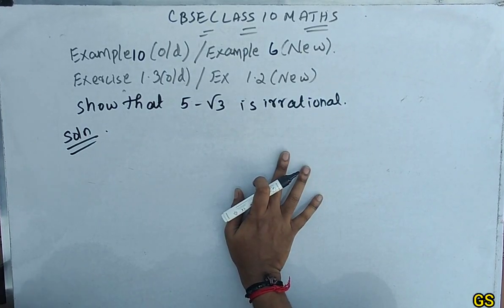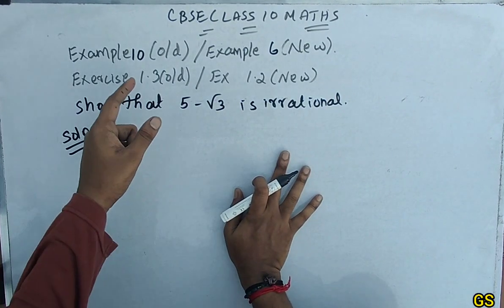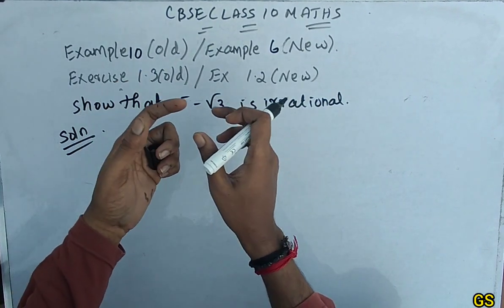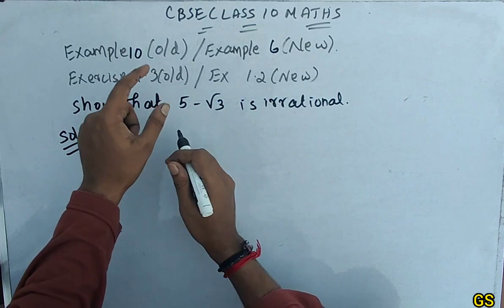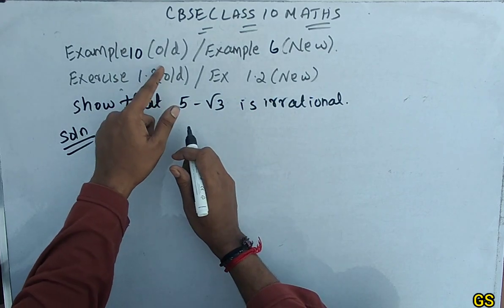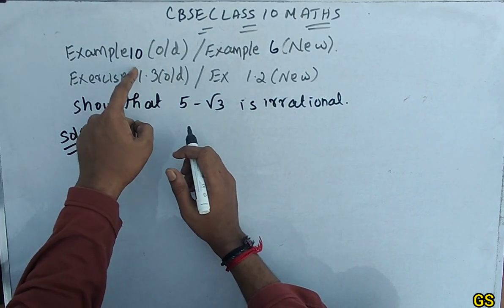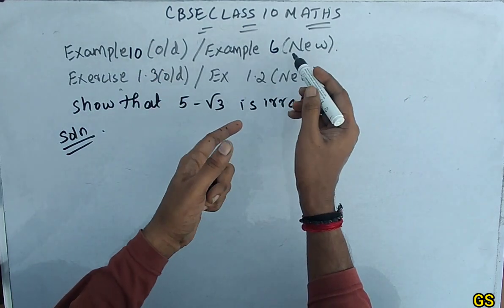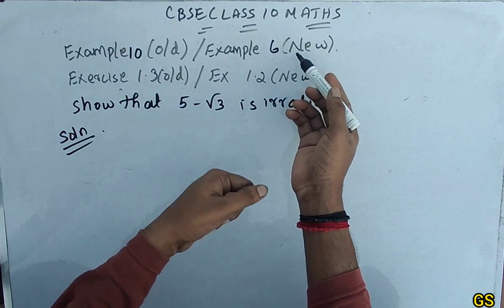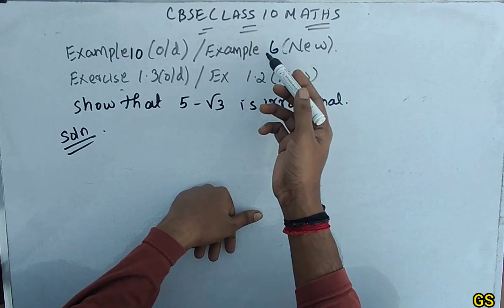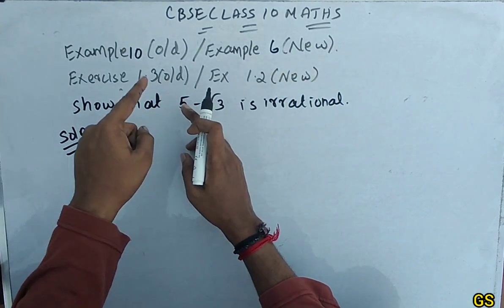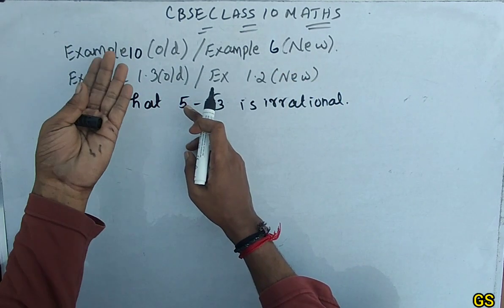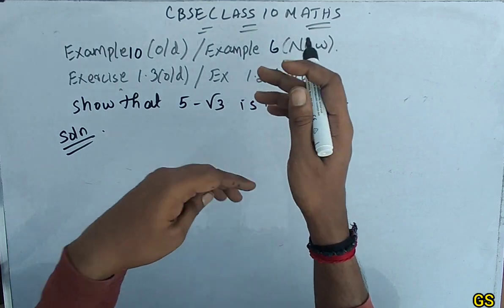Hi friends, welcome to CBC class 10th. So, example number 10 — if you are using an old edition textbook. If you are using the new edition textbook, you can see example 6. The old edition is exercise 1.3 and the new edition is 1.2.